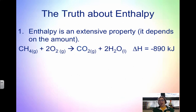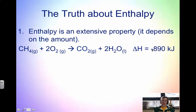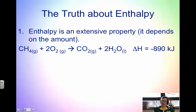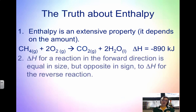Some guidelines to help with enthalpy: First, enthalpy is an extensive property — it depends on the amount of substance. For example, when you burn one mole of methane with two moles of oxygen, you release 890 kilojoules (notice it's negative — exothermic). If you want to burn two moles of methane, multiply everything in the equation by two, and also multiply delta H by two, giving close to 1800 kilojoules released.